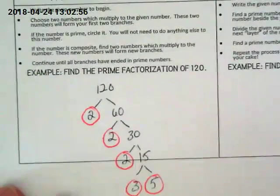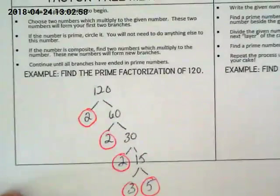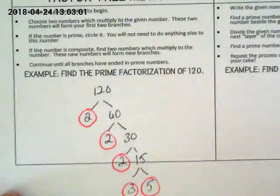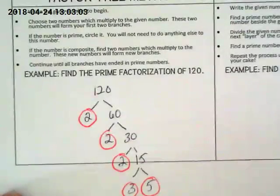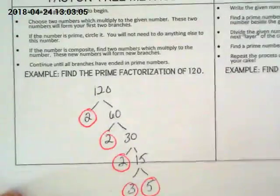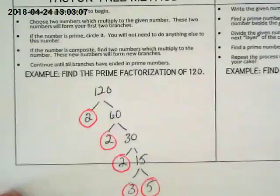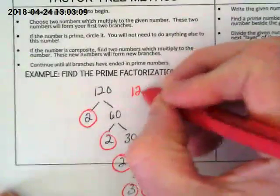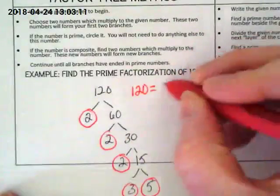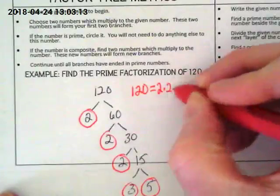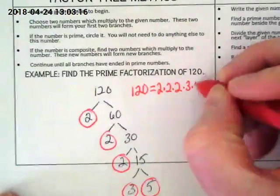This works. When we're trying to find all the prime factors of a number, you can make a factor tree. It's not my favorite method because if you've got a number that's got lots and lots of factors, the branches can get messy. But this is how we would write the solution. 120 is equal to 2 times 2 times 2 times 3 times 5.